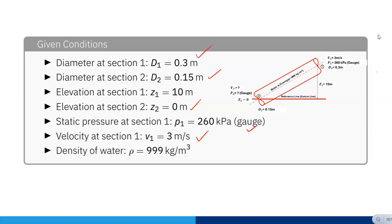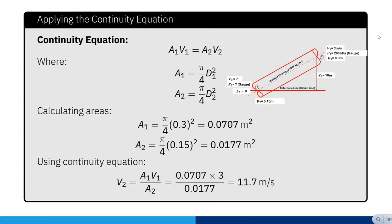First we have to apply continuity equation. We know that continuity equation is A1 V1 equals A2 V2, where A1 is pi by 4 d1 squared and A2 is pi by 4 d2 squared. So A1 is pi by 4 times 0.3 squared, which equals 0.0707 meter squared, and A2 is pi by 4 times 0.15 squared, which equals